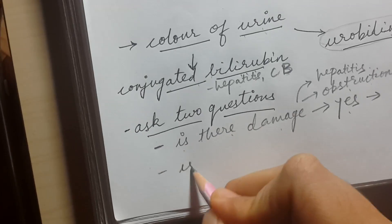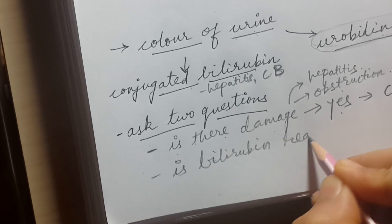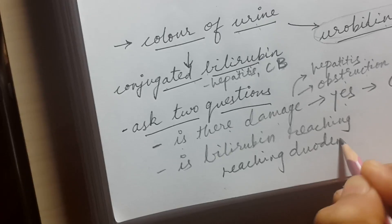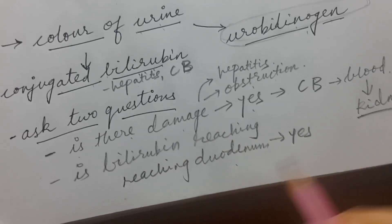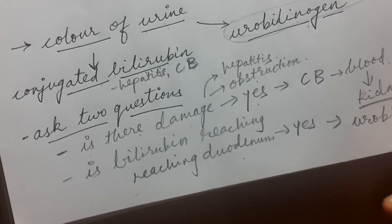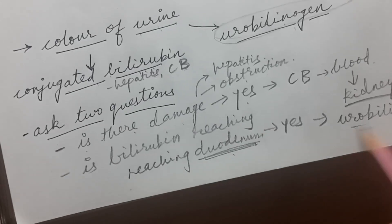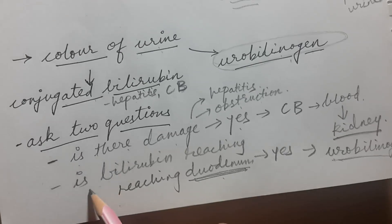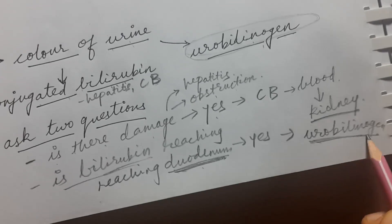The second question is: is bilirubin reaching the duodenum? If yes, we will see urobilinogen in the urine, because without reaching the duodenum, bilirubin cannot be converted into urobilinogen. In all causes of jaundice where bilirubin reaches the duodenum, we will see dark urine due to urobilinogen.